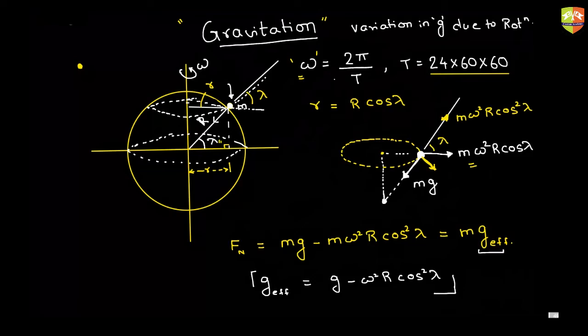Usually we ignore this variation of g due to Earth's rotation because it is very small. But g will be maximum when cos(lambda) equals zero, i.e., when lambda equals 90 degrees — that happens at the North Pole and South Pole. At the equator, where lambda equals zero, the value of g will be minimum.